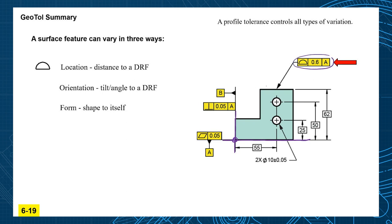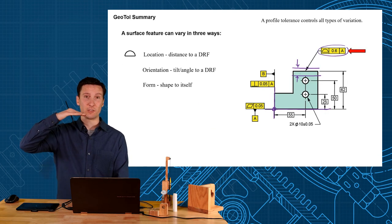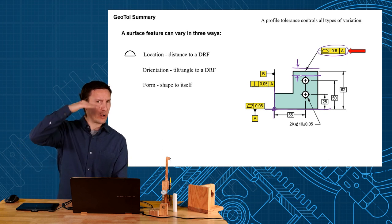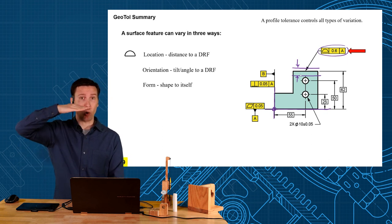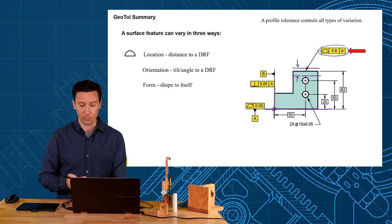Profile tolerance is such a powerful control and one of our main tolerances because it creates two parallel planes that controls the location of where that surface is. Notice how when you locate a surface within two parallel planes you also control the orientation, you also control the form.